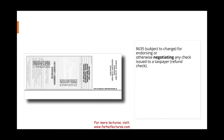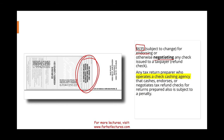There is a $635 penalty for endorsing a check. When a taxpayer receives a refund check from the IRS, the tax preparer cannot negotiate, endorse, or otherwise handle that check — it belongs to the taxpayer. Any preparer who operates a check-cashing agency that endorses or negotiates tax refund checks for returns they prepared is also subject to this penalty.